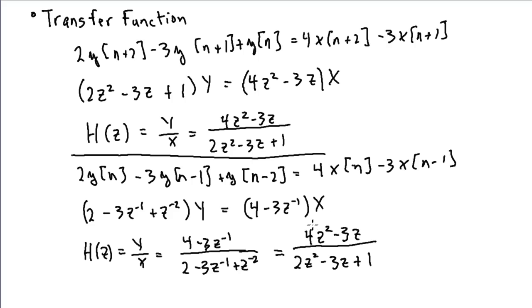It's a little work to get the transfer function, but once we have it, it tells us a lot about the system. In this particular case, we can write our H as z times 2z minus 3 halves. Then I can factor that denominator as z minus 1 half and z minus 1.